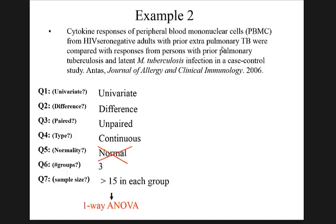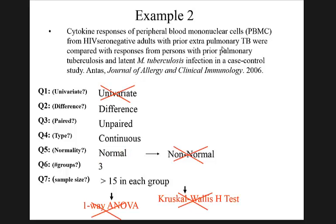If the outcome is not normally distributed, use Kruskal-Wallis — the nonparametric version of ANOVA. If it's an observational study requiring adjustment for confounding, we use regression. Type of outcome is continuous, no repeats — so linear regression.